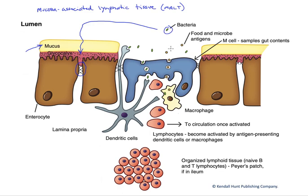In the colon, the peristaltic contractions slow down dramatically, and we find that the bacterial colonies increase dramatically in number there.